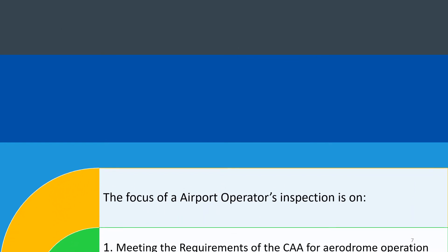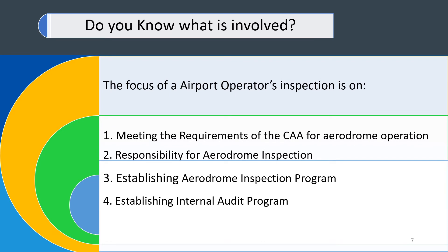We moved on to the airport operator and the question still remains: do you know what is involved? We looked at the focus of the airport operator and observed that the airport operator is working to achieve a set of standards and recommended practices or regulations set by the CAA. These regulations mandate the airport operator to establish a self-inspection program, record the details of the inspection, and initiate actions to correct any deviations observed, and also file the report of that self-inspection program for inspection by the CAA during their audits.